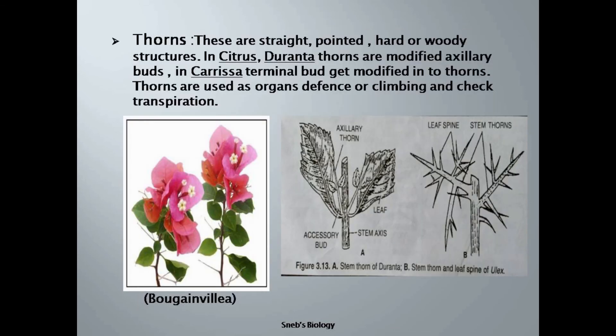Next comes another modification — thorns. These are straight, pointed, hard or woody structures. Sometimes they may bear leaves or flowers, or even be branched. They are present in the axil of a leaf or at the apex of the stem. These are modified stems performing the functions of either climbing or defense, and they also check transpiration. In Citrus and Duranta, thorns are modified axillary buds. In Bougainvillea, thorns are modified extra-axillary buds.